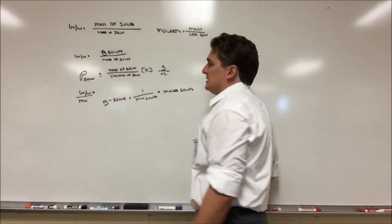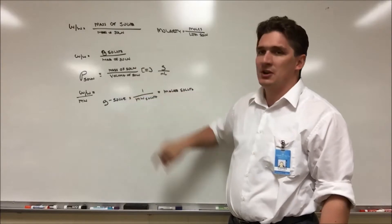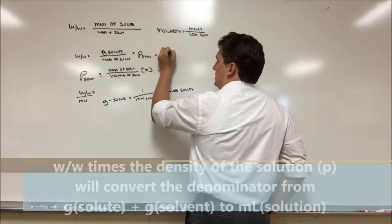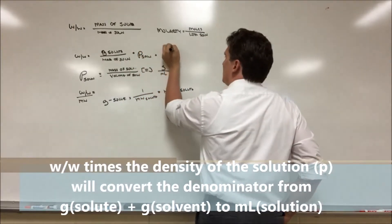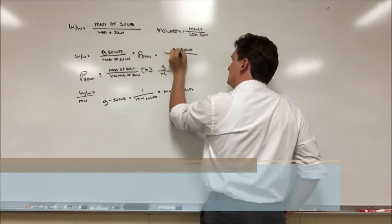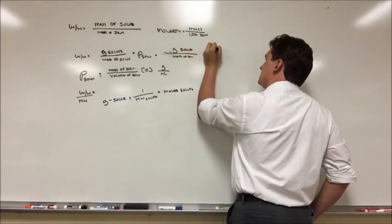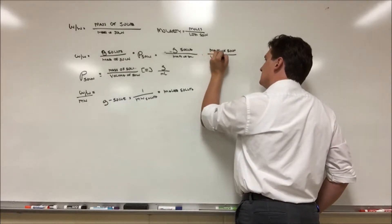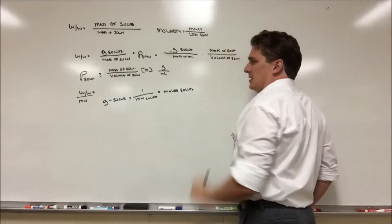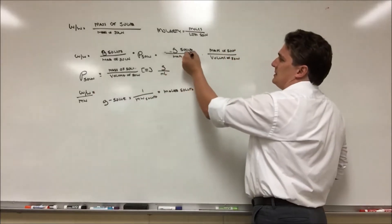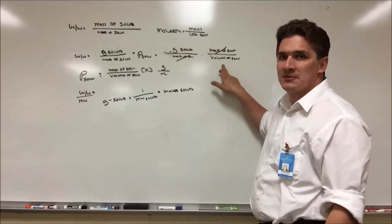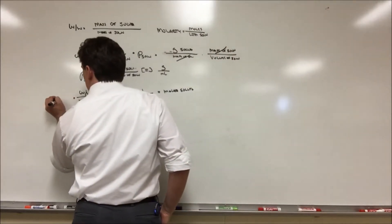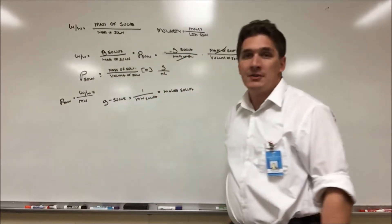Next, if we look at the density — mass of solution over volume of solution — and we multiply the weight fraction by density, we end up canceling the mass of solution. This gives us: W/W equals grams of solute per mass of solution, times mass of solution divided by volume of solution. So multiplying by density gives us grams of solute per volume of solution, which is what we need since we need volume for molarity.